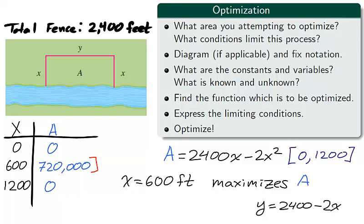But we wanted more than just x. We were interested in the dimensions of the rectangle. Recall that we found the relation between y and x, y equals 2400 minus 2x, using the limiting condition P. So when x is 600 feet, y is 1200 feet. And this dimension for the rectangle maximizes the area on the interval 0 to 1200.